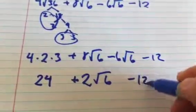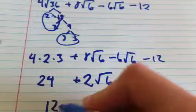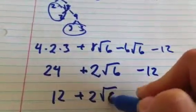And then minus 12. 24 minus 12 is 12. So 12 plus 2 root 6.